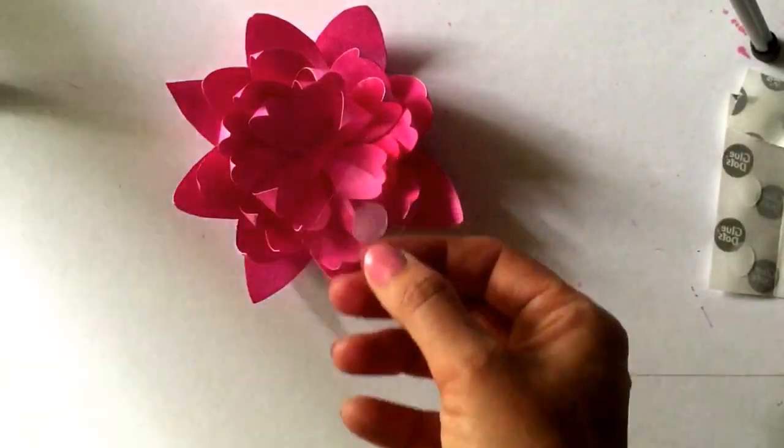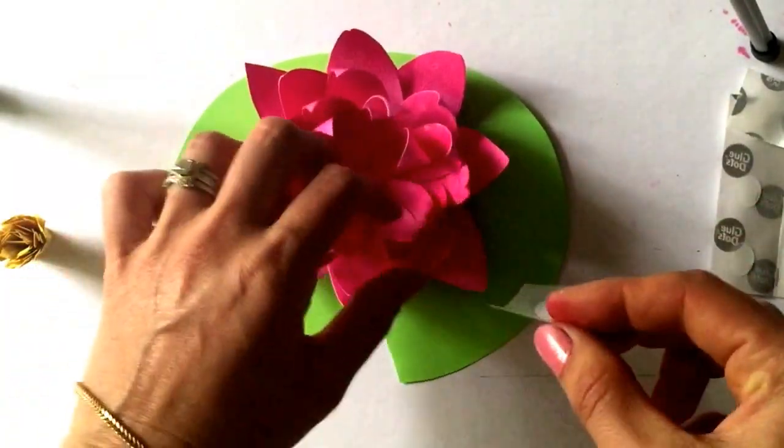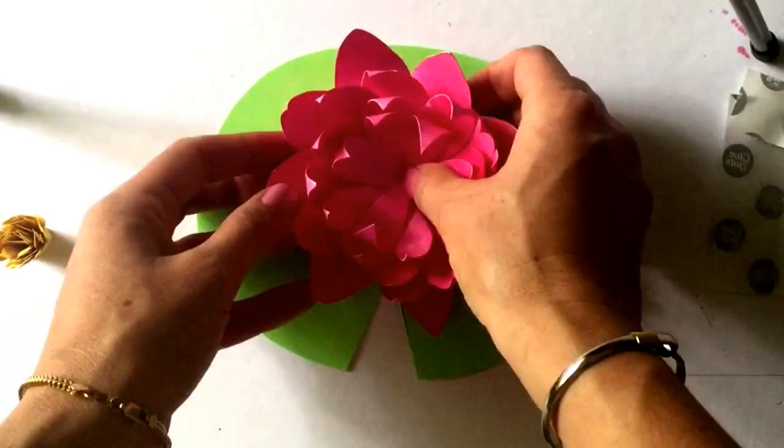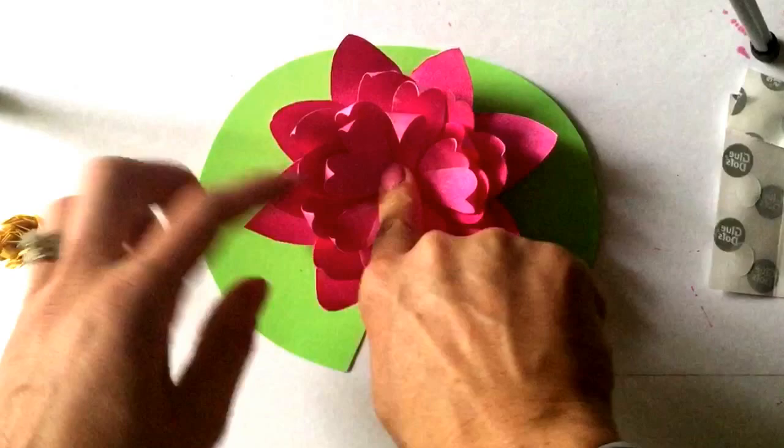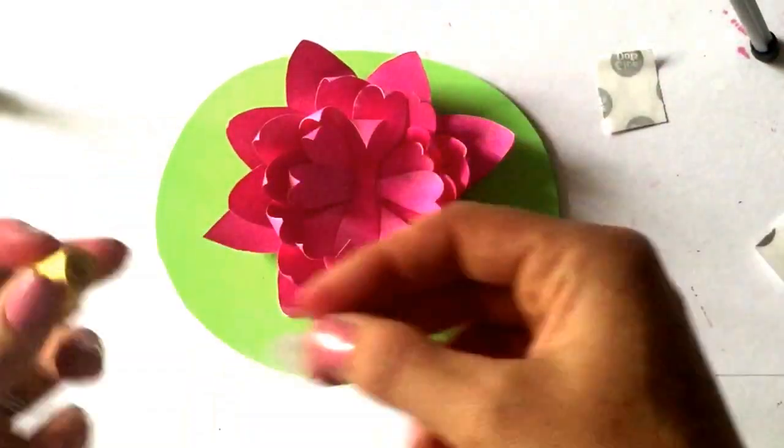Step 7a, attach the lotus flower to the cut out lily pad using a glue dot. Step 8a, attach the flower's yellow center using a glue dot.